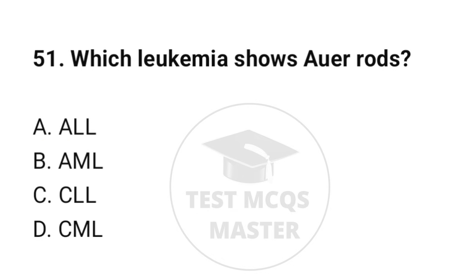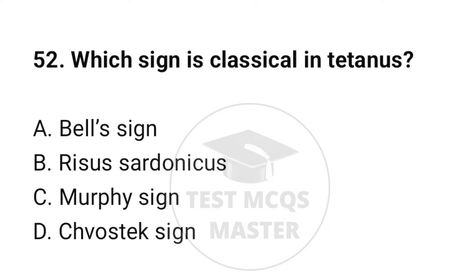Question number 51: Which leukemia shows Auer rods? The correct option is B: AML. Question number 52: Which sign is classical in tetanus? The correct option is B: Risus sardonicus.